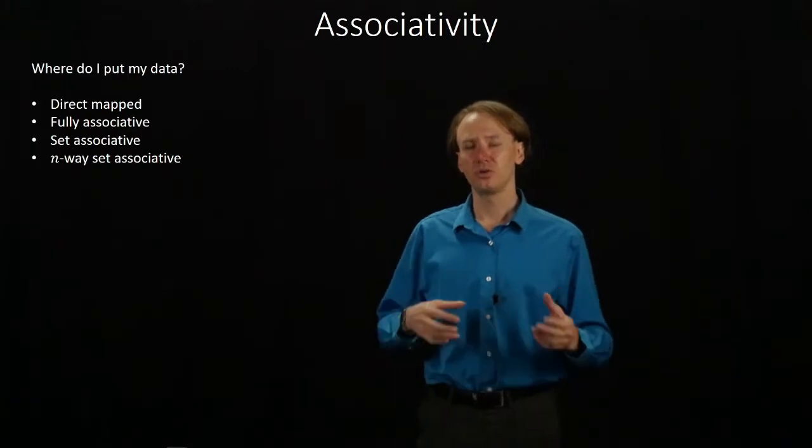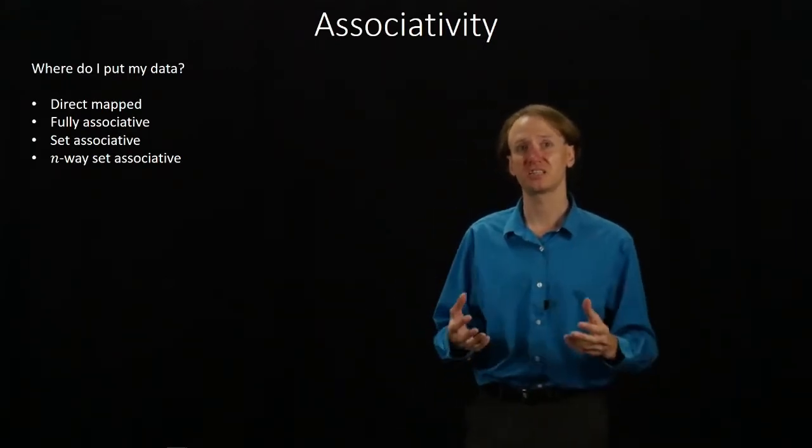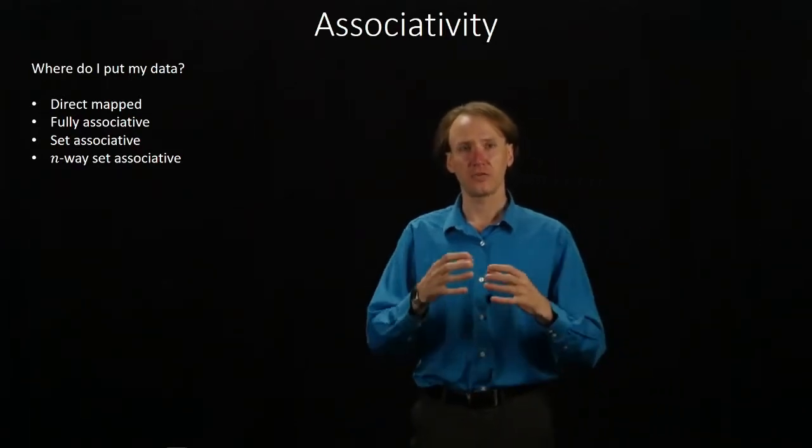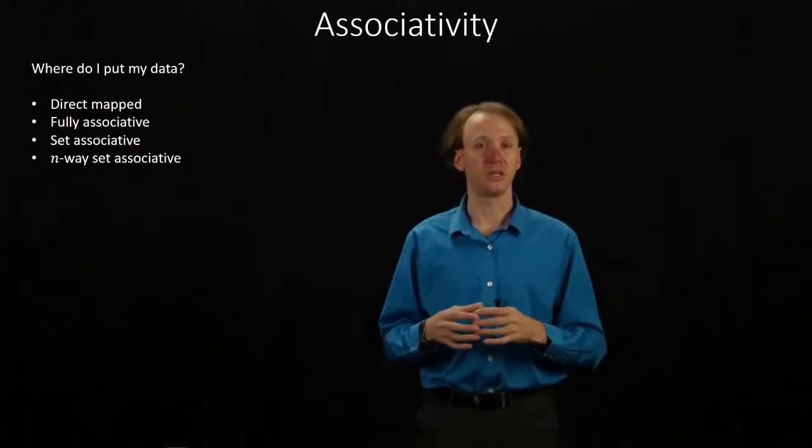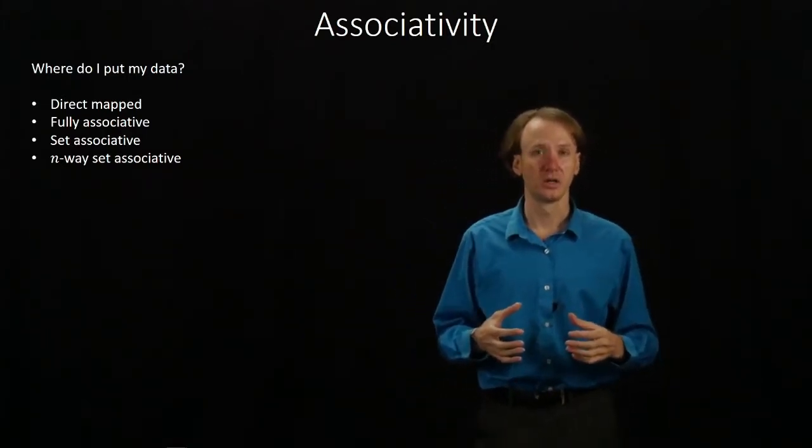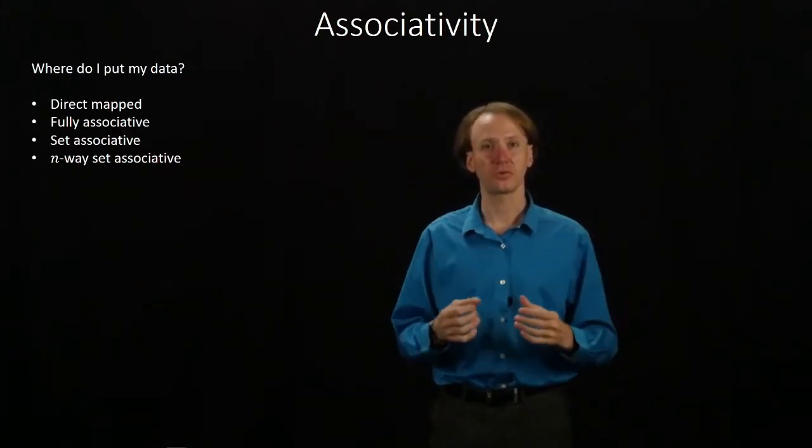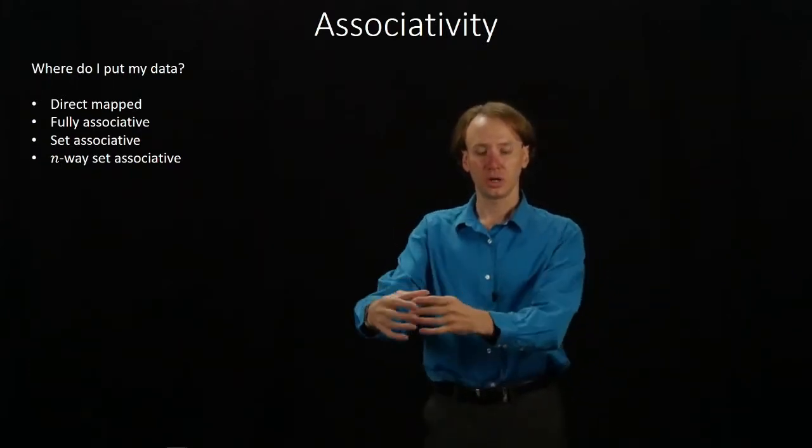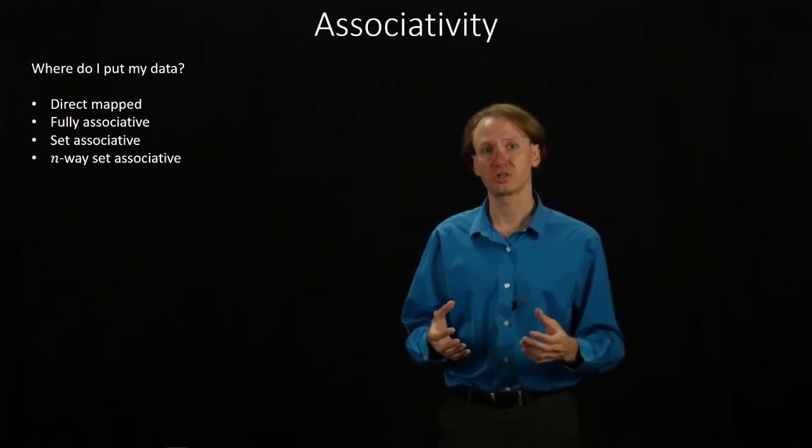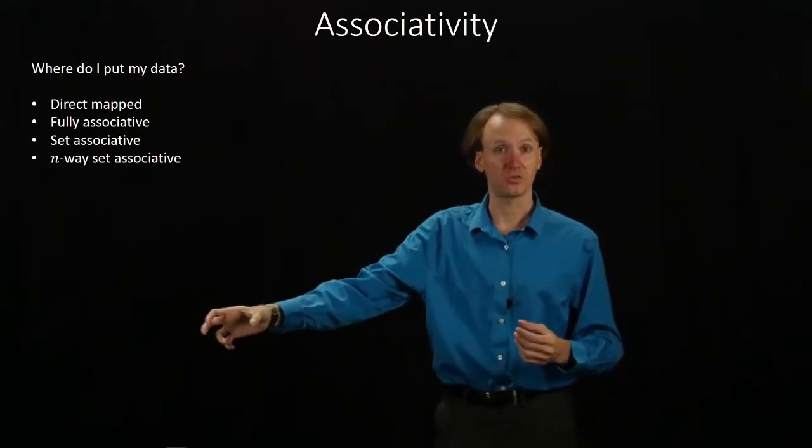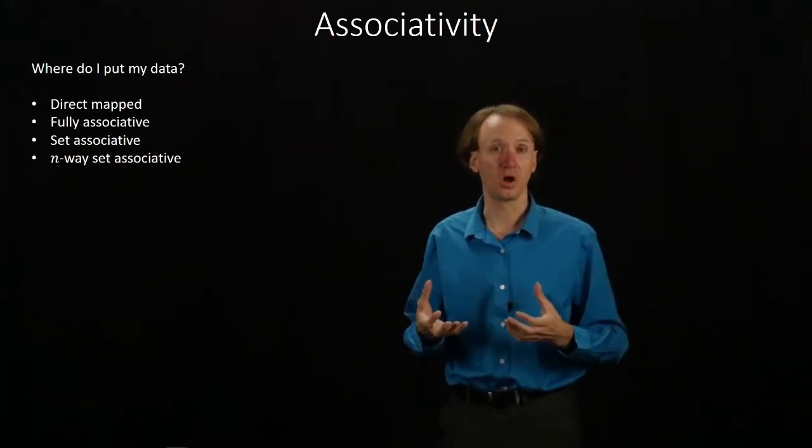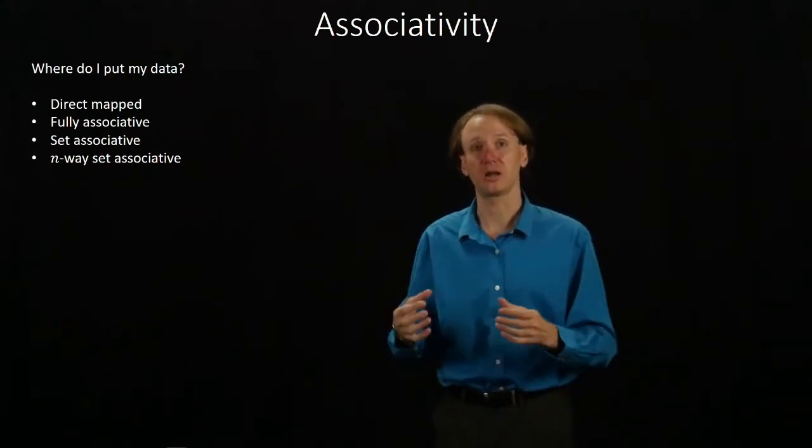So we usually pick something in between, some form of set associative cache. In this case, there's a handful of related areas that it could be hiding in. With a set associative cache, you might say I've got four different blocks. Each one can hold some of them. Rather like what we did with the branch prediction, we'd hash the address of the data that you want and use that to tell which of, say, four blocks we might be able to find our data in.